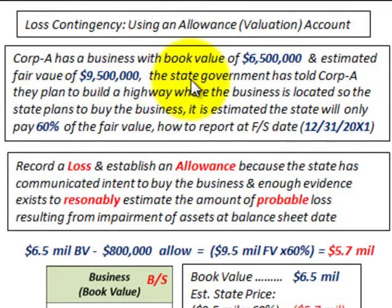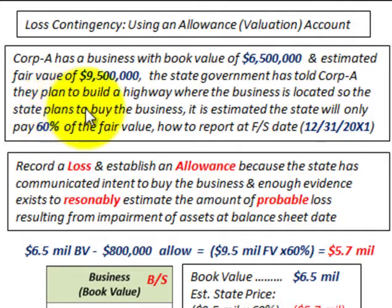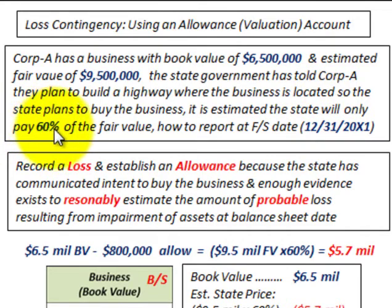The state government has told Corporation A they plan to build a highway where this business is located, so the state plans to buy this business. It is estimated that the state is only going to pay 60% of the fair value of this business, and that's a reasonable estimate in this case.